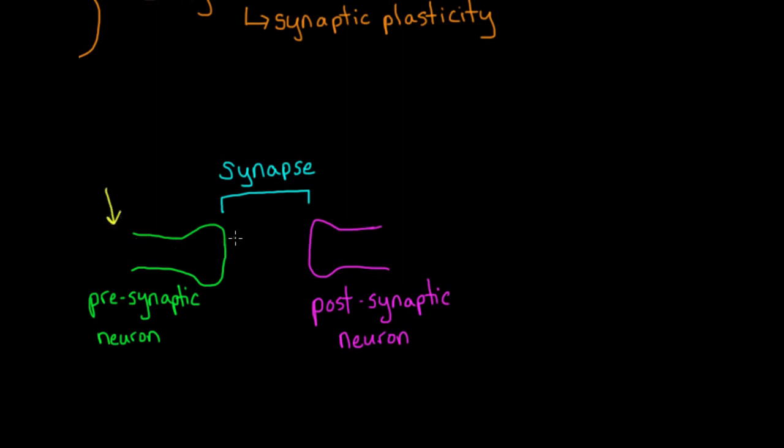When the presynaptic neuron is stimulated, it releases neurotransmitters, or special chemicals, which then bind to receptors on the postsynaptic neuron, opening channels to allow ions, such as sodium and calcium, to flow in.